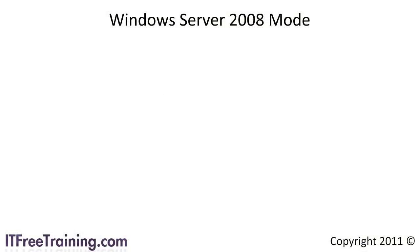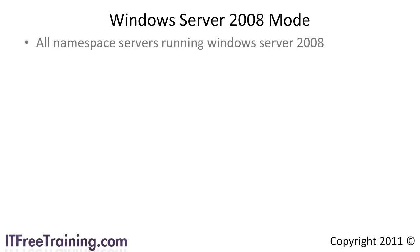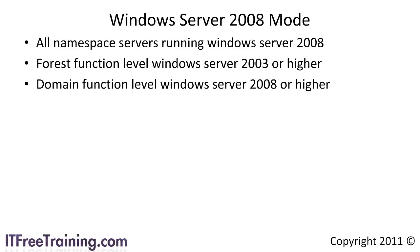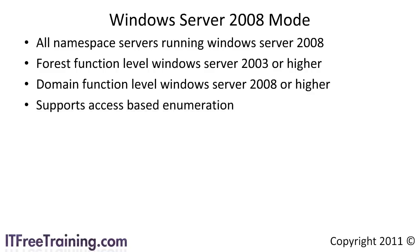To enable Windows Server 2008 on your namespace, all your namespace servers must be running Windows Server 2008. Your forest function level must be Windows Server 2003 or higher. Finally, your domain function level must be Windows Server 2008 or higher. If your network has all this in place, you can set your Windows Server 2008 mode DFS namespaces. These namespaces will be able to support access-based enumeration. This means that if a user does not have access to a shared folder, the folder will not appear to the user.